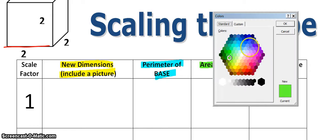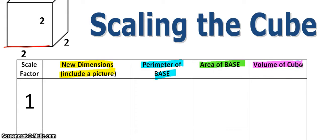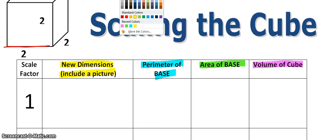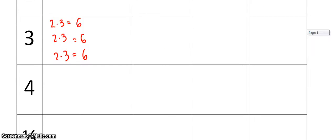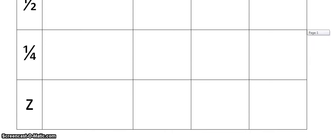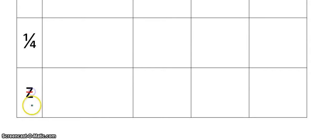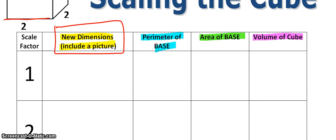I'm going to have you pause the video. I want you to determine the dimensions — what we've already done. Go through and say, if the scale factor is 1, what are the new dimensions of the cube? Do the same for 2, 4, a half, a fourth. And z is just a variable, so if I scale it by z, what would the new dimensions be? Basically you're completing column 1. Pause the video and go ahead and do that on your own.